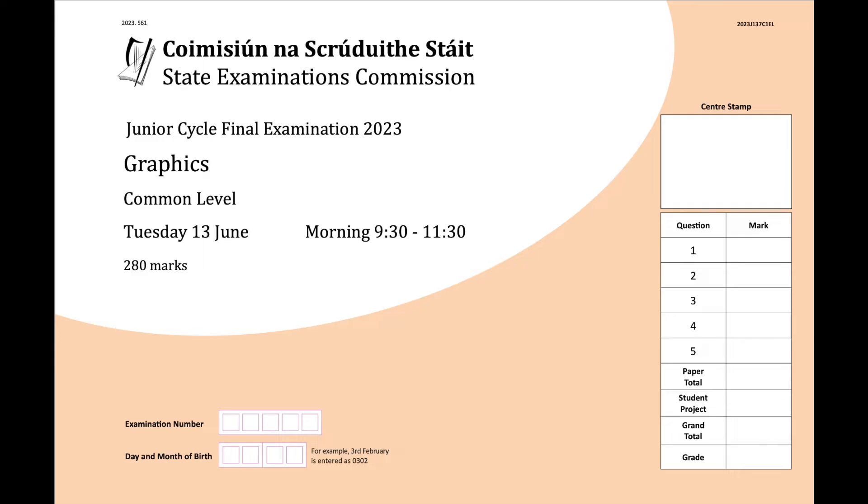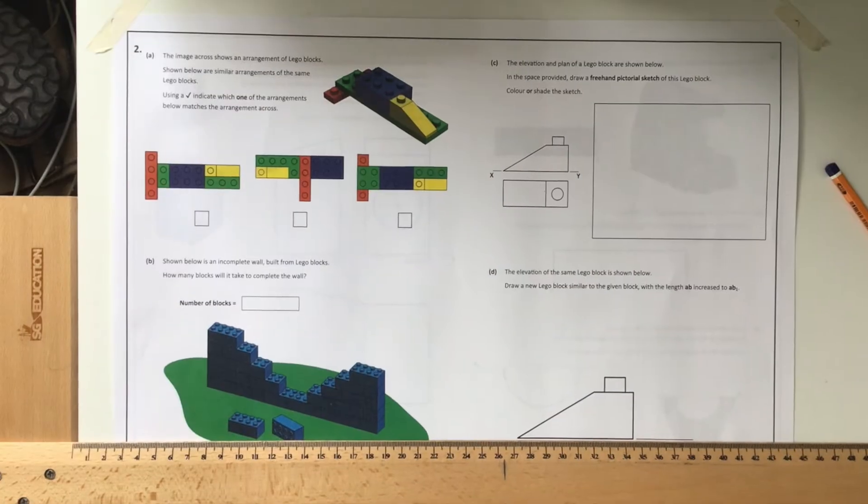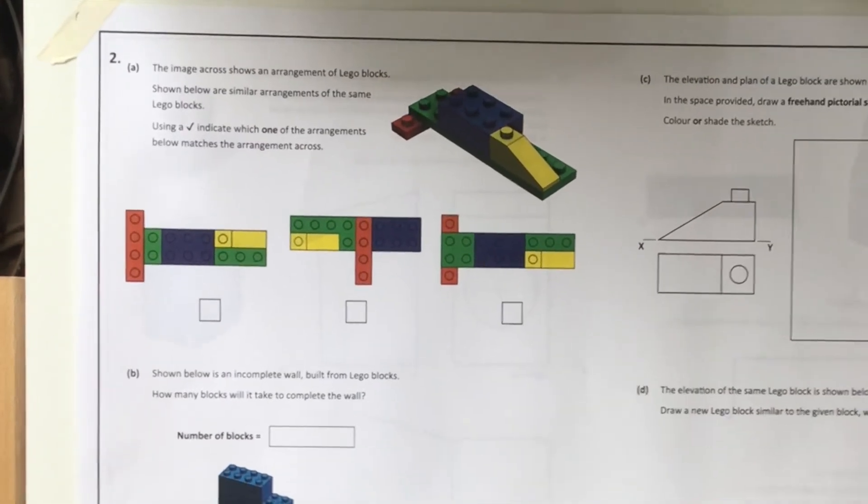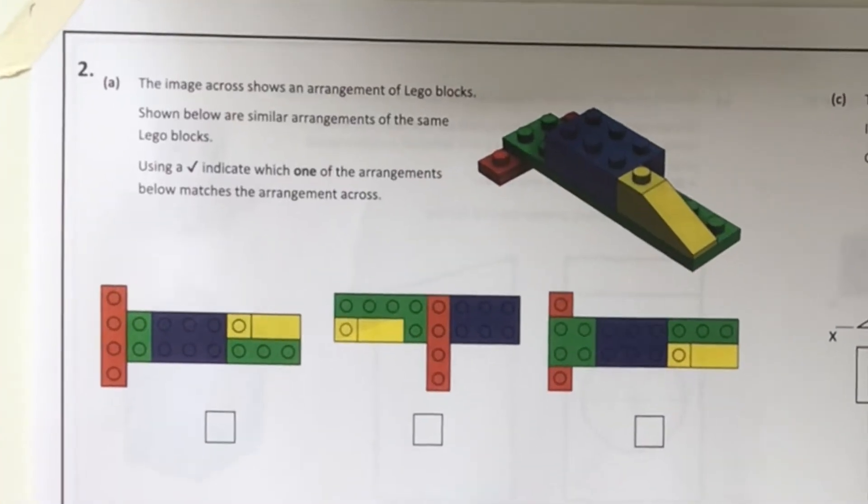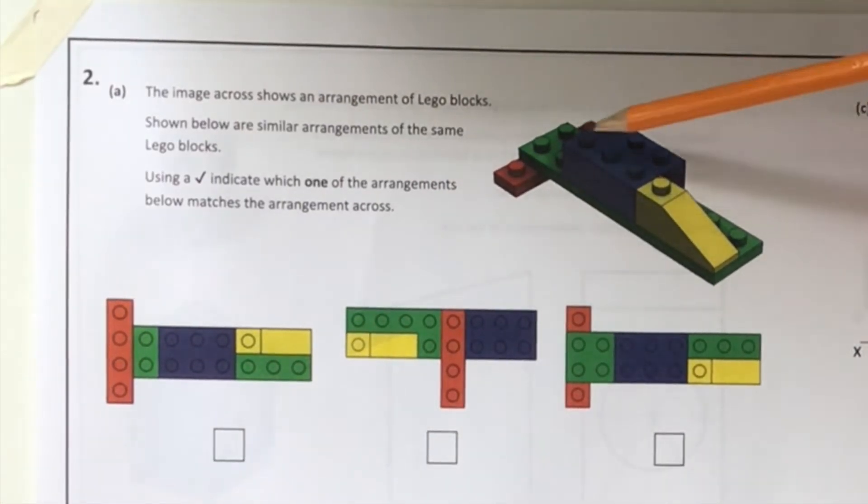Okay, so we're back with another question here from the Junior Cycle 2023 exam for graphics. We're going to start looking at question two today, and we're going to start off with 2a. So 2a is this Lego question and it's assessing your orthographic principles or your spatial awareness ability.